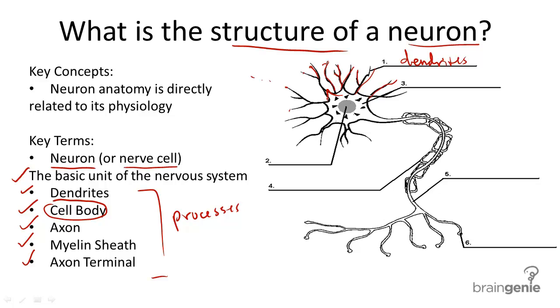Then, the soma, or the body of the nerve cell, contains the nucleus and mitochondria and other cellular processes of a nerve cell.